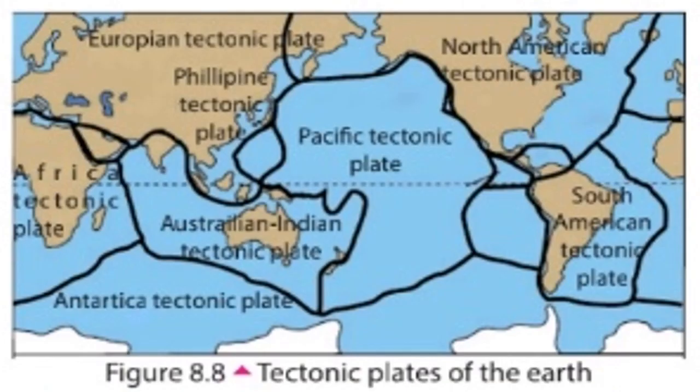The surface layer of the earth is the crust. The crust is divided into sections called tectonic plates. These tectonic plates move relatively to each other. These are the tectonic plates of the earth.